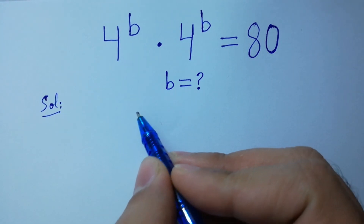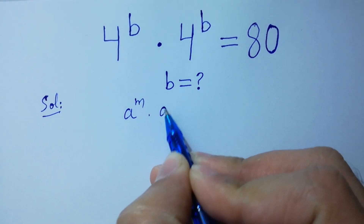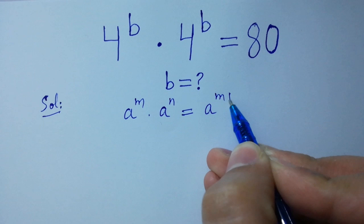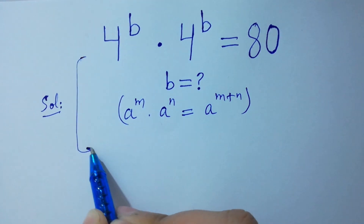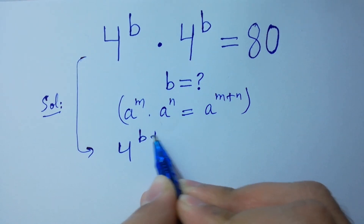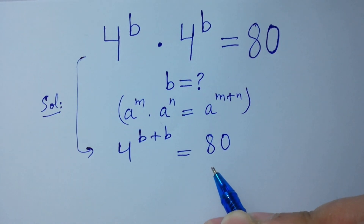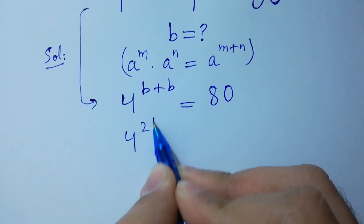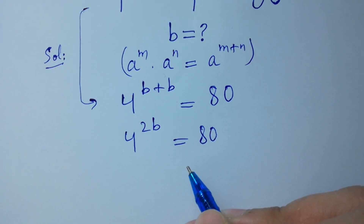As we know that a to the power m times a to the power n equals a to the power m plus n. So it will be equal to 4 to the power B plus B equals 80. Therefore 4 to the power 2B equals 80. Take log on both sides.